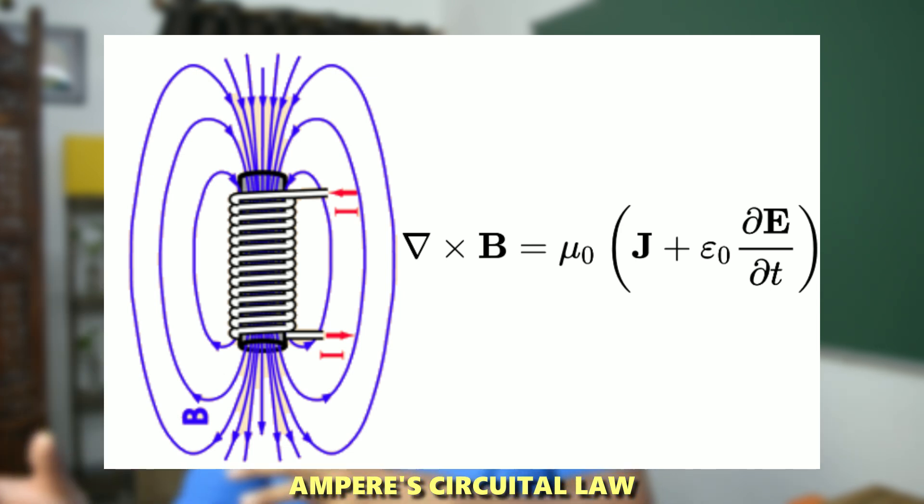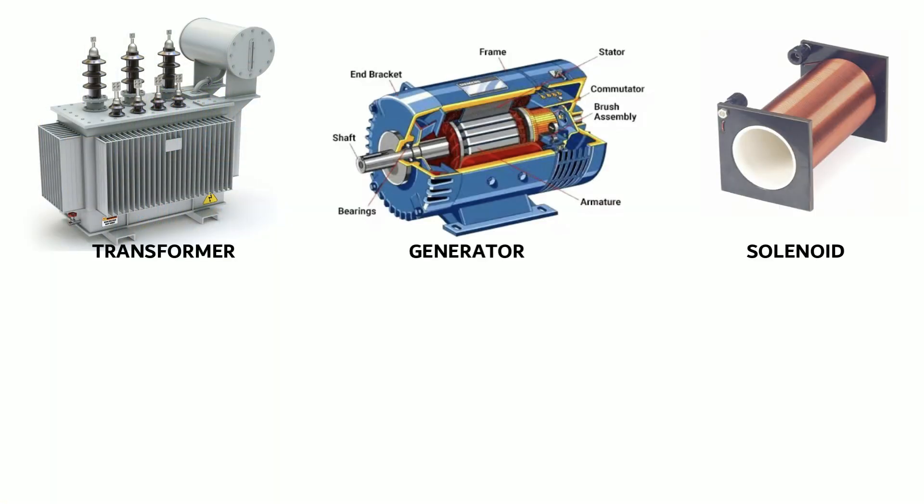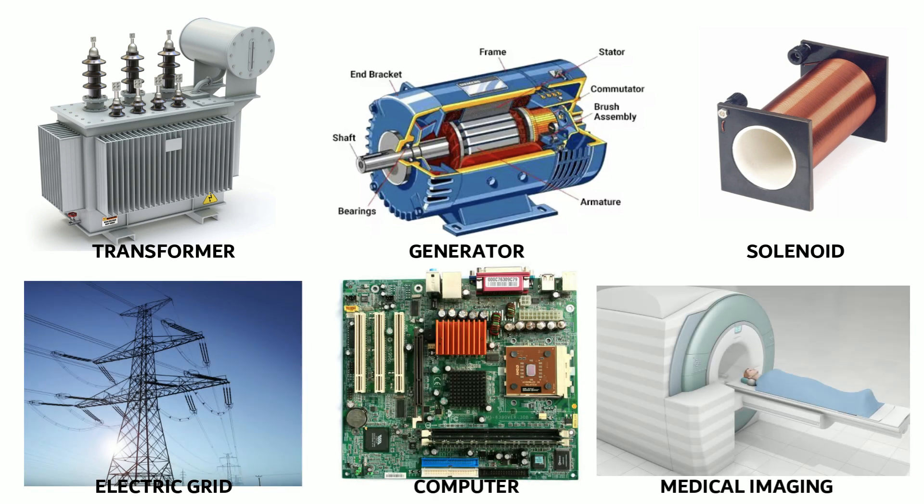The fourth is Ampere's Circular Law modified by Maxwell, which says how a changing electric field can lead to a magnetic field — for example, in electromagnets, running a current creates an artificial magnetic field. Understanding Maxwell's Equations is essential for a complete description of electric charges, currents, and magnetic fields, and for electrical devices like transformers, electric generators, solenoids, electrical grids, computers, and medical imaging.